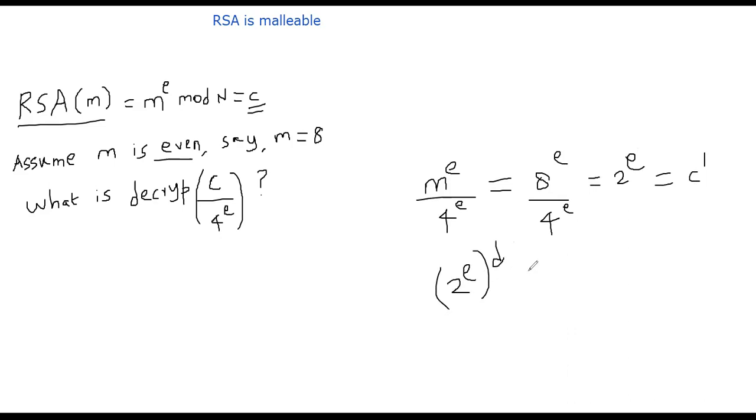In mod n. So e and d will cancel out, you get 2. So the decryptor will get 2, even though the sender has sent 8.